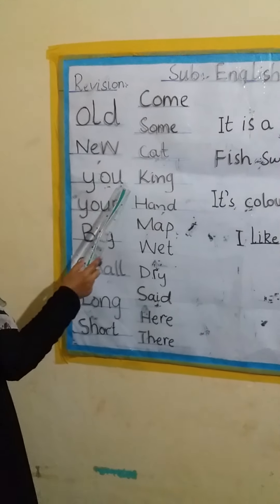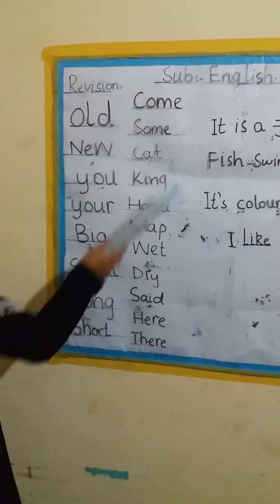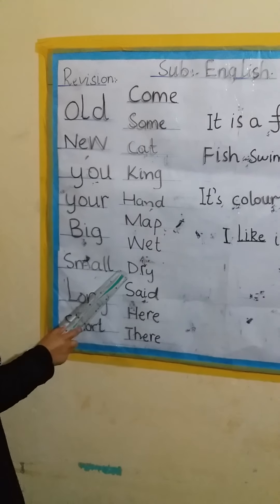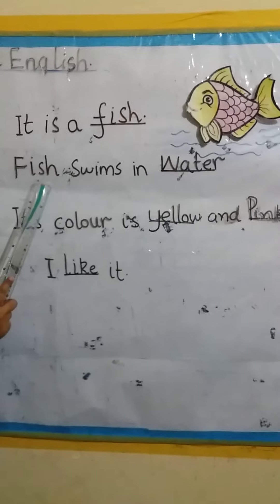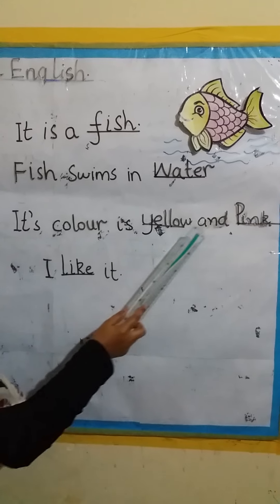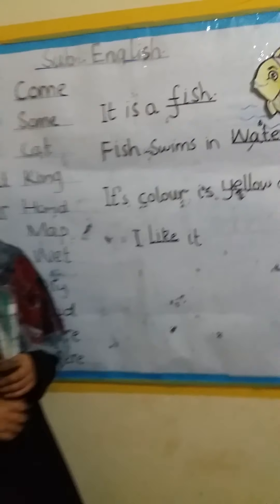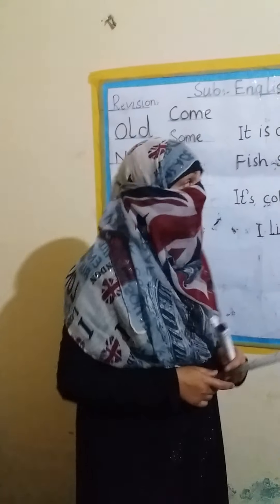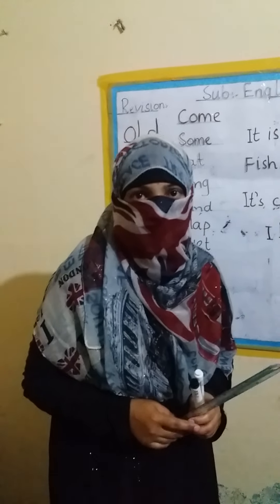Revised again: Old, New, You, Big, Small, Long, Short, Some, Cat, King, Hand, Map, Wet, Dry, Sad, Here, There. It is a fish. Fish swims in water. Its color is yellow and pink. Write these in your notebooks and learn. Okay, Allah Hafiz, take care.